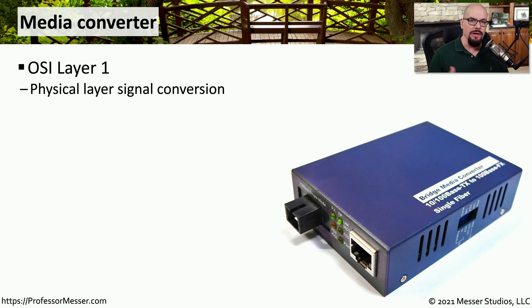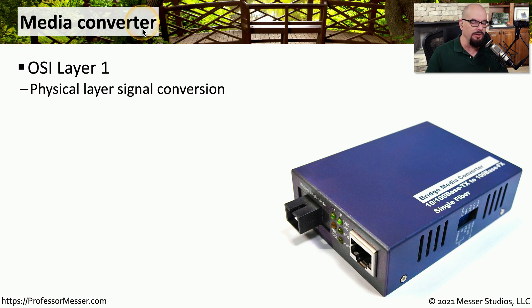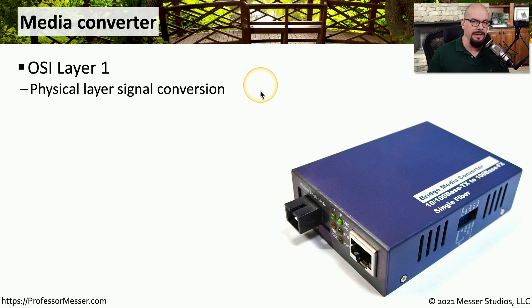If you work on a network for any amount of time, you will eventually run into a scenario where you need a fiber connection and all you have is a copper connection, or vice versa. In order to create the type of connection you need, you may need to use a media converter. This is a device that operates at OSI layer 1 and converts the signals of one media type to the signals of a different media type.